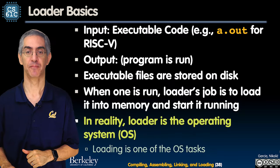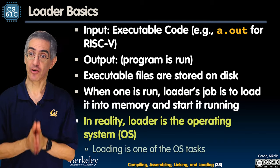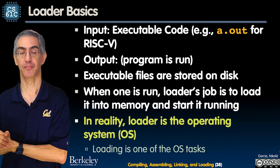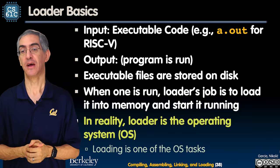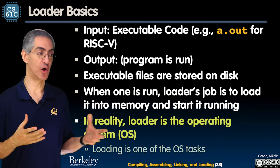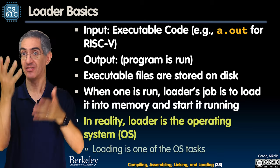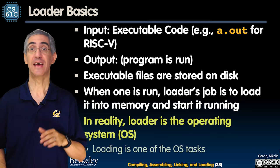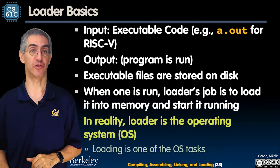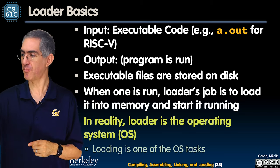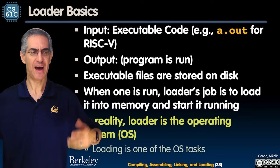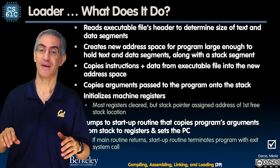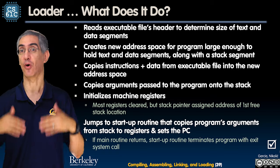The loader's input is executable code — A.out or some better name. The output is the program actually running. Executables are on disk; the loader's job is to load it into memory, set up everything that needs to be set up, and start it running. In reality, the loader is actually the OS. If you take CS 162, you'll learn all about what loaders do in an explicit lecture. This is one slide — a lot on it, but it covers all the pieces.